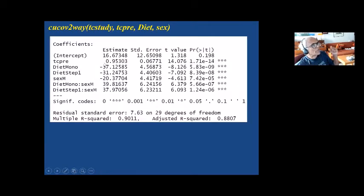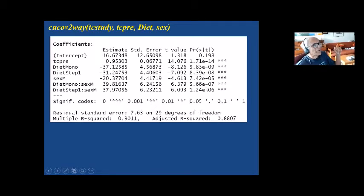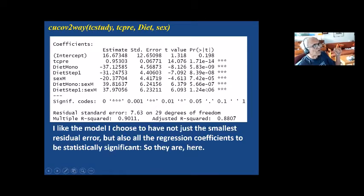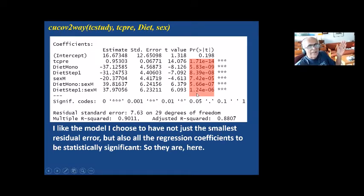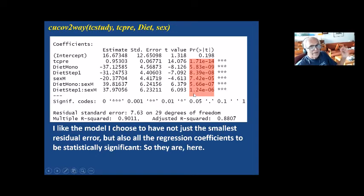For this best model — from the residual error and partial F-test — we look at the regression coefficients. Again, all of the coefficients are significant here. As I said before, it's great when this happens, but sometimes it doesn't.